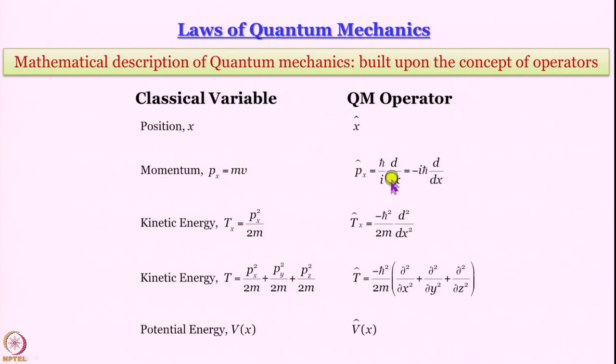If you want to find out momentum, the operator that you have to use is h cross by i ddx. If you want to find out kinetic energy, this is not very difficult to understand. Px square by 2m gives minus h cross square by 2m d2dx2. Just remember, the meaning of ddx square is ddx operating twice. You have something psi, you find first derivative with respect to dx, then find second derivative—that is basically square of operator. Square of operator means same operator operating twice in succession. You can build an operator for each and every classical variable.